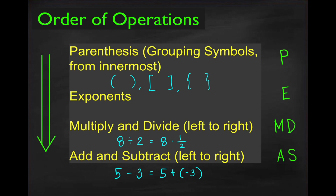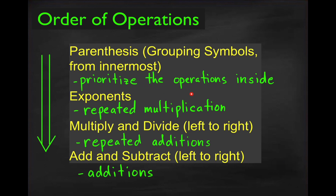PEMDAS tells us that if we want to perform a set of operations before other operations, we have to use grouping symbols. Then we perform exponents, which is actually repeated multiplication, followed by multiplication, which is actually repeated addition. We always end with the most basic arithmetic operation, which is addition. So the question is: why do we perform exponents first, followed by multiplication and division, and then addition and subtraction?